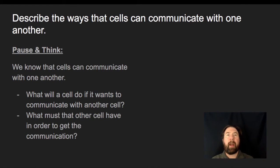So first up, we want to describe the ways that cells communicate with one another. But before I get into talking about this, I want you to pause and think about this because I think you're going to have a sense of how cells do this, whether you know all the names of how things do these things, but I'm sure you have some sense of how cells communicate. So we know that cells can communicate with one another. So the first thing I want you to do is I want you to think, what will a cell do if it wants to communicate with another cell?